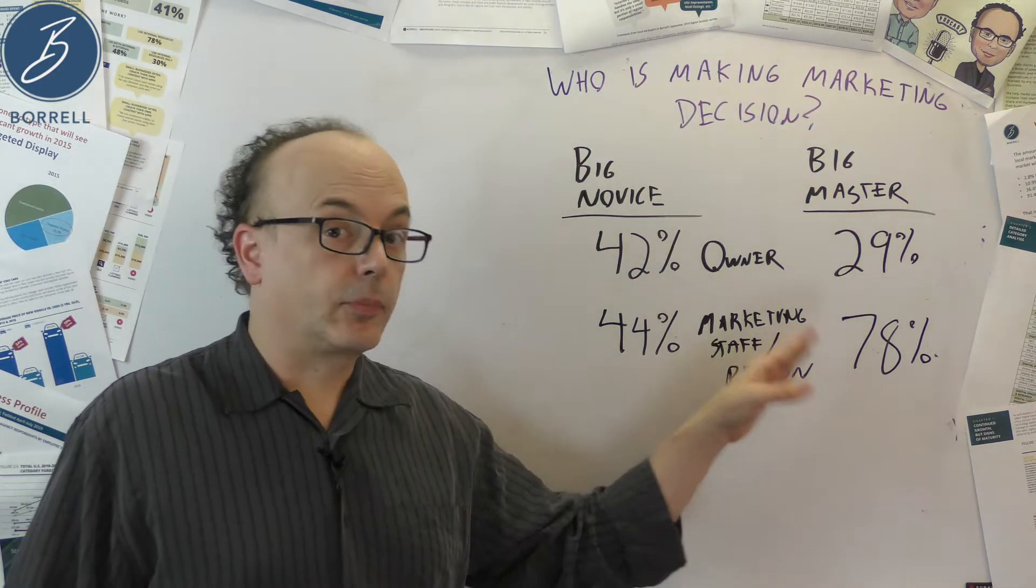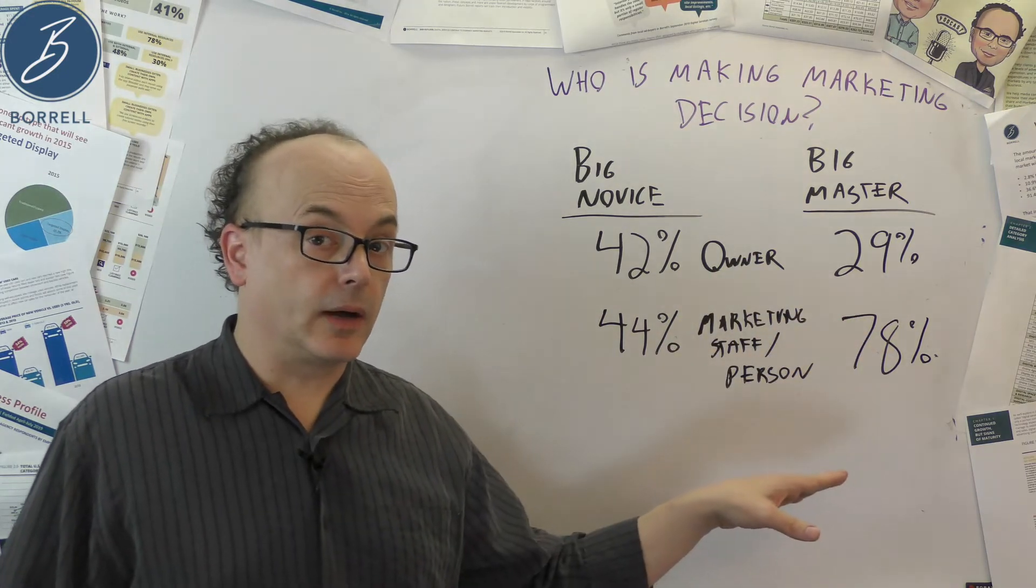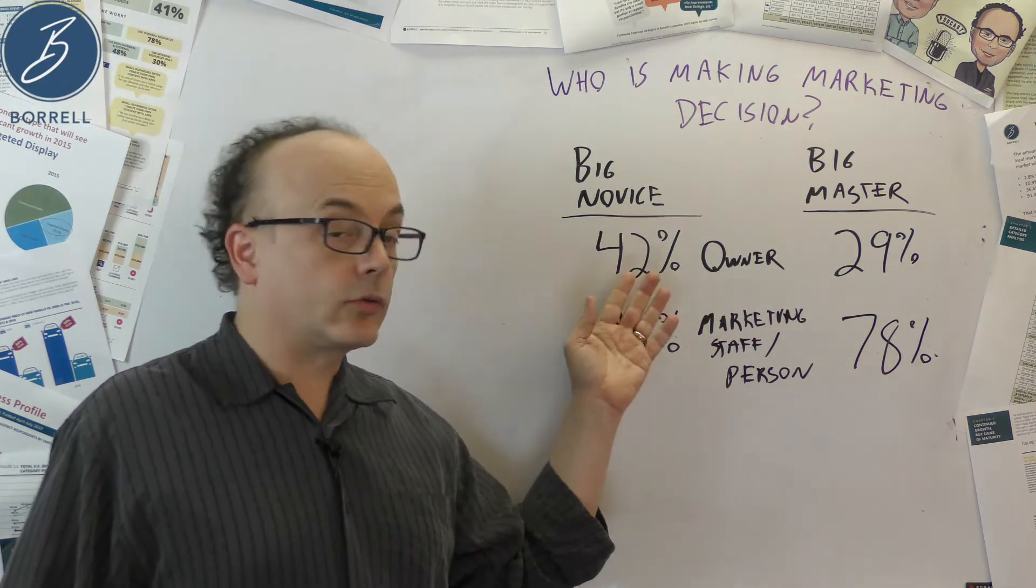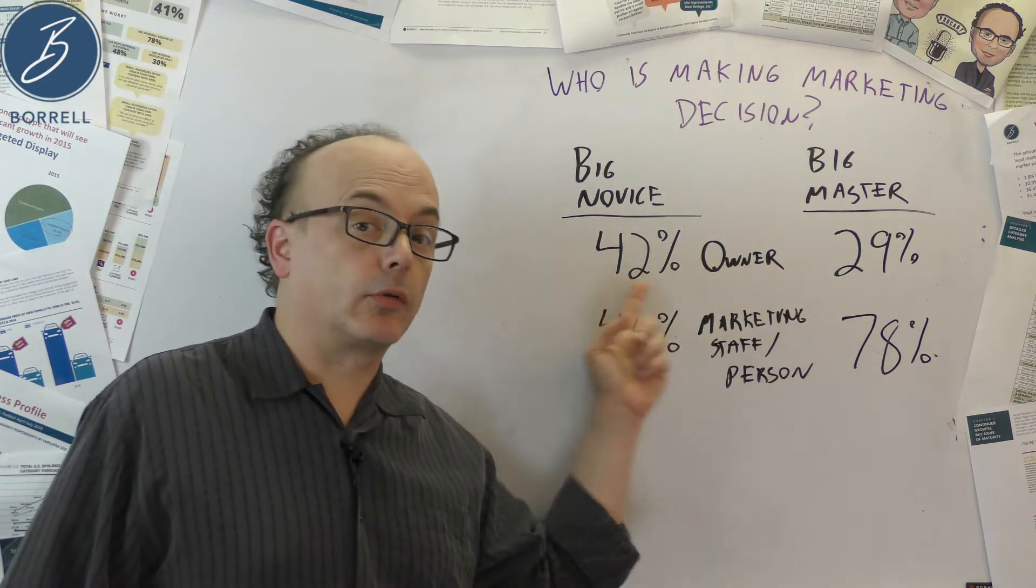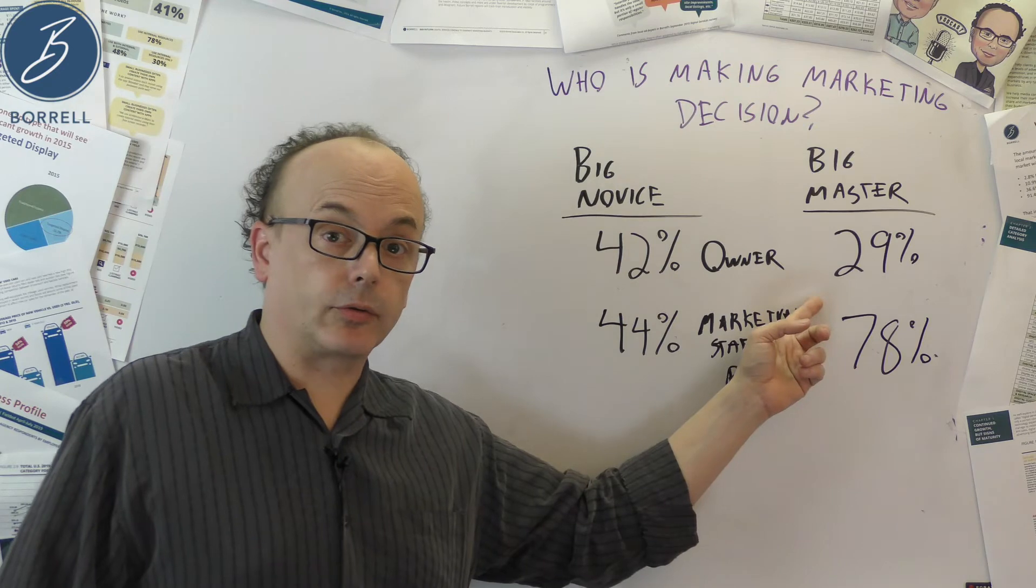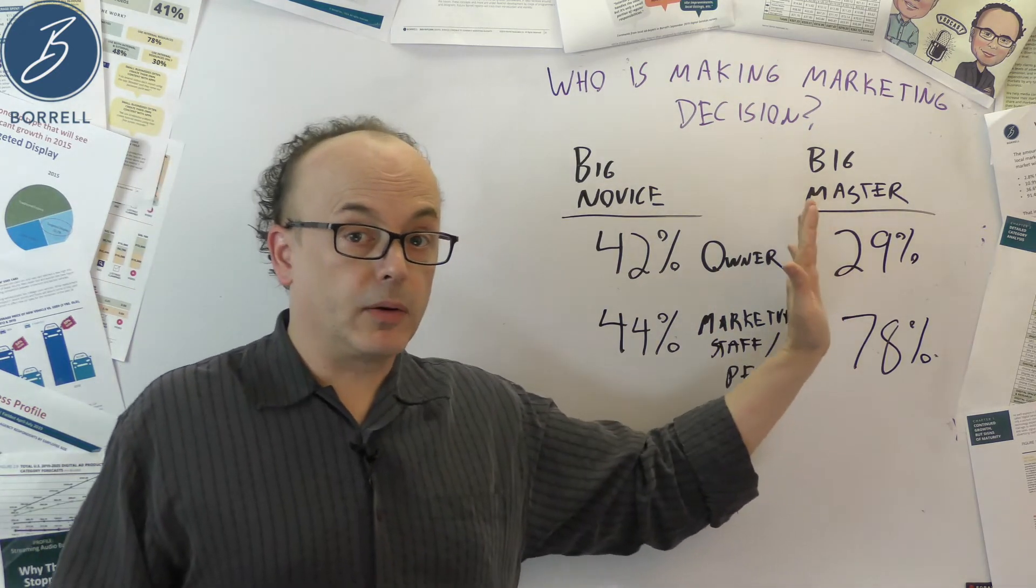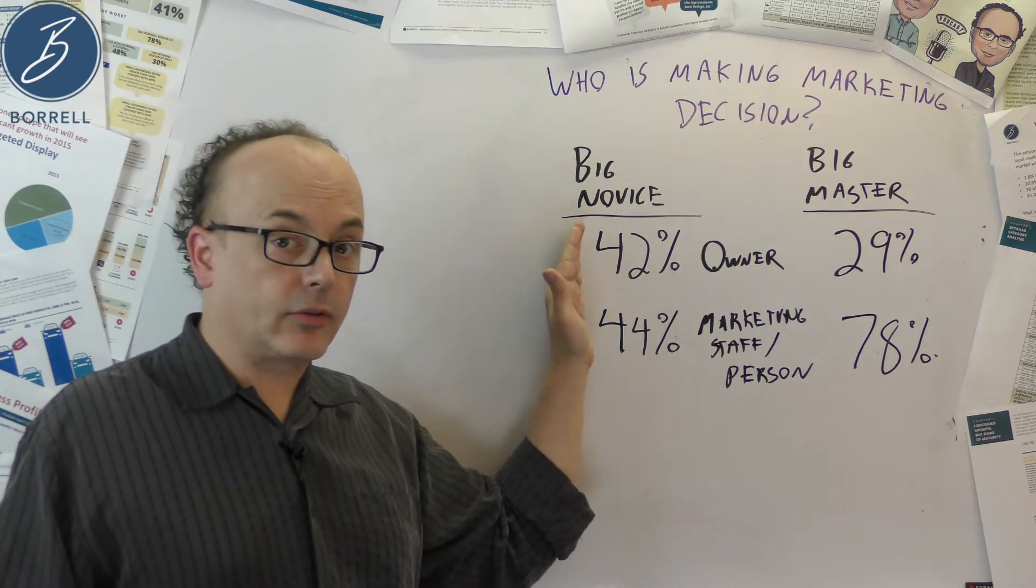Aha! So, spending more money, spending it on more media might be a derivative from here. But these guys are still relying on an owner. Well, equally marketing staff as well, but much more of a reliance on an owner than the big masters. So, we know these guys spend more. Are there any clues about these guys to get them here?